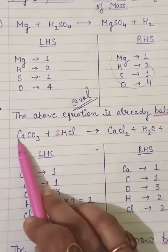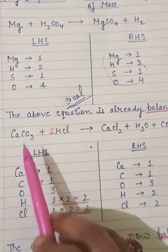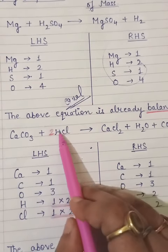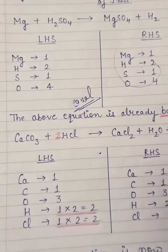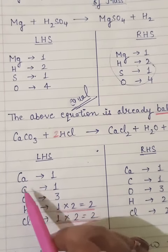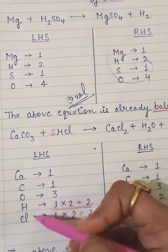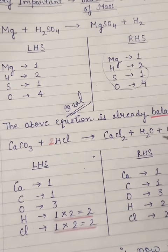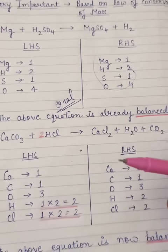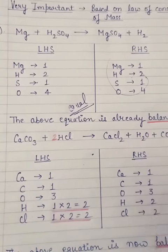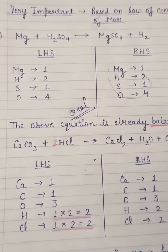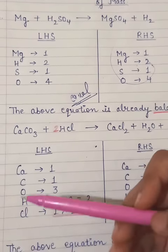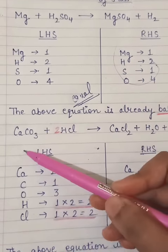Look at the second equation. Here also we have done exactly the same - LHS and RHS. For LHS what you have to do is first write all the elements present: calcium Ca, carbon C, oxygen O, hydrogen H, chlorine Cl. Some students might wonder why sometimes I write Ca alone, C alone, sometimes Cl, sometimes H alone.